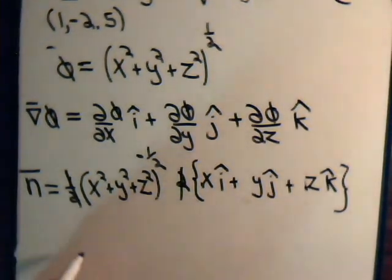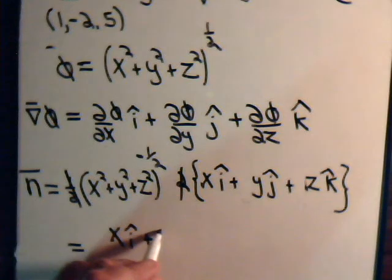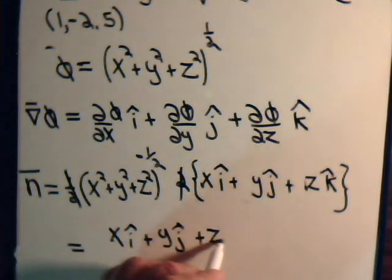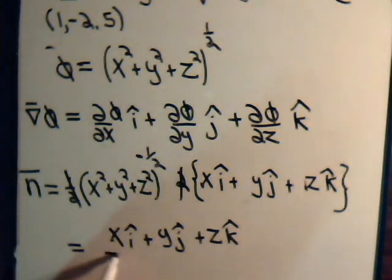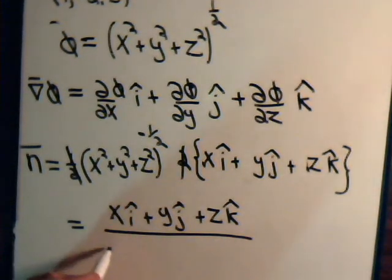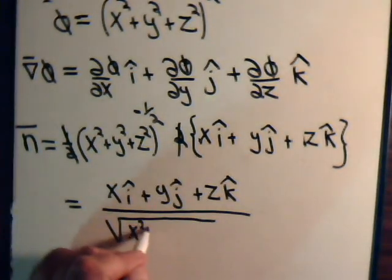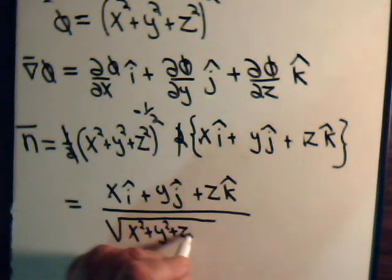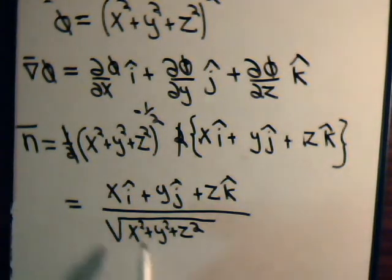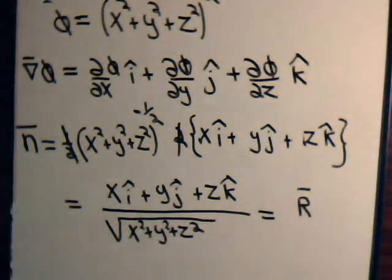We can factor the 2 out from the numerator, and with the one-half factor in the denominator those cancel. So we have this equals x i plus y j plus z k, divided by the square root of x squared plus y squared plus z squared. For a sphere, this denominator is the equation for the radius of the sphere — it is the magnitude of the radius vector.